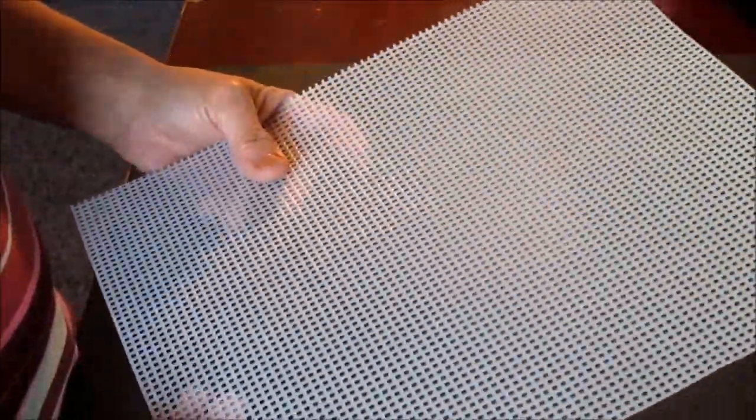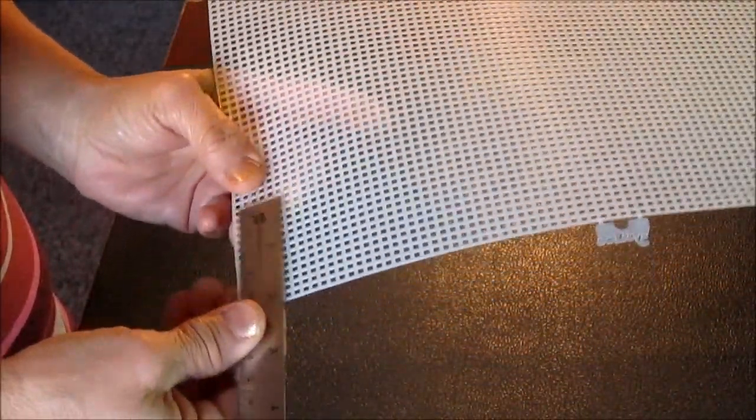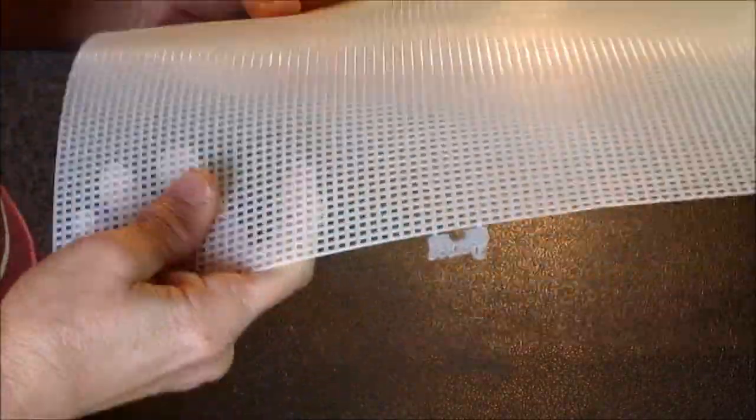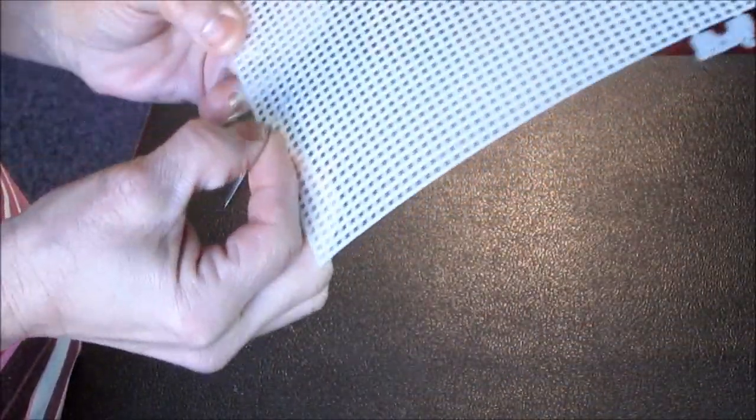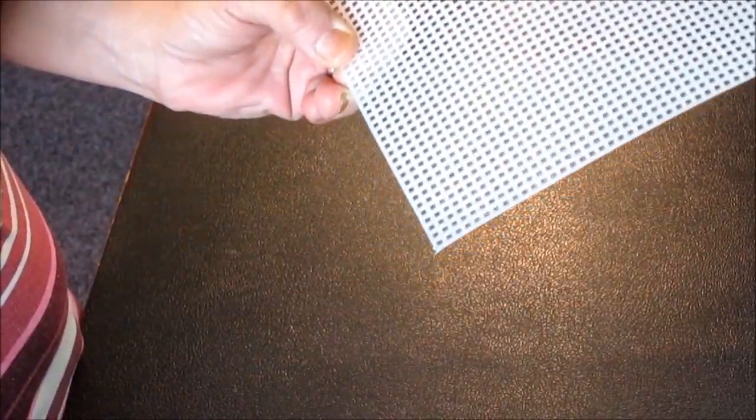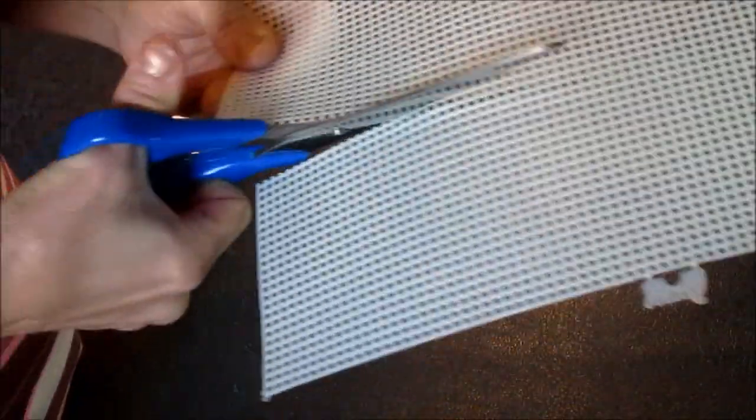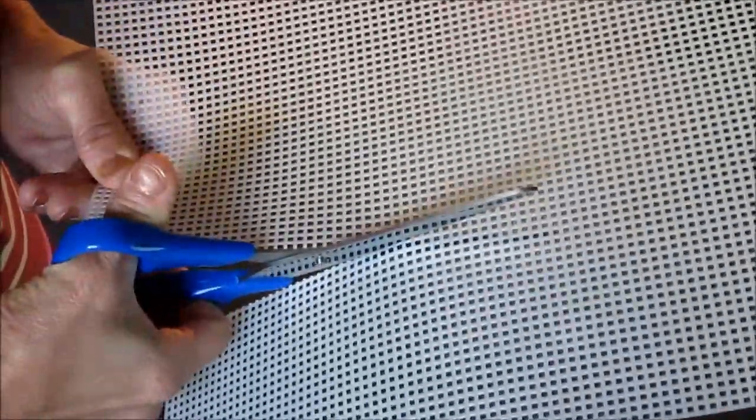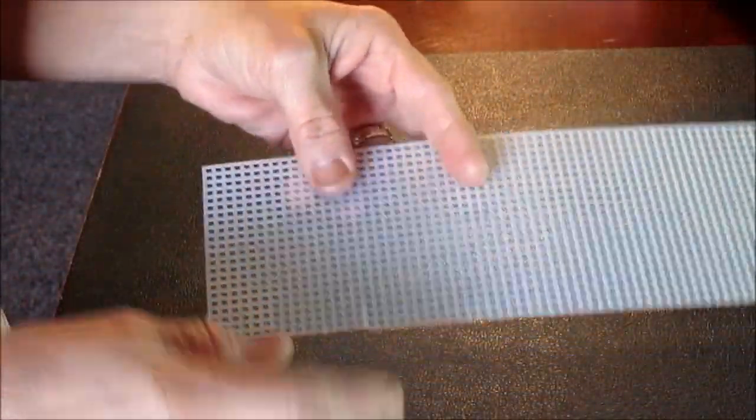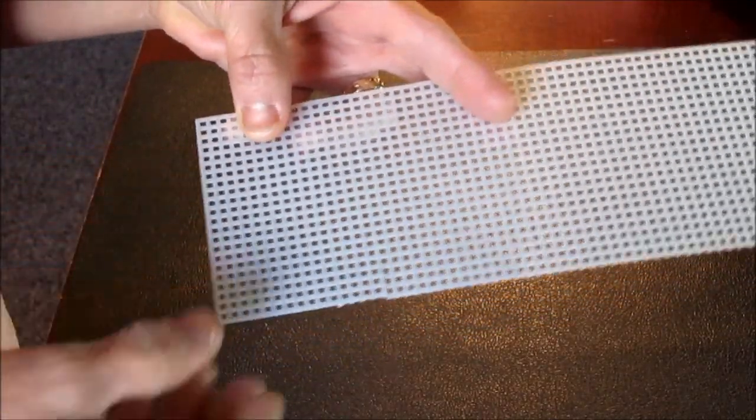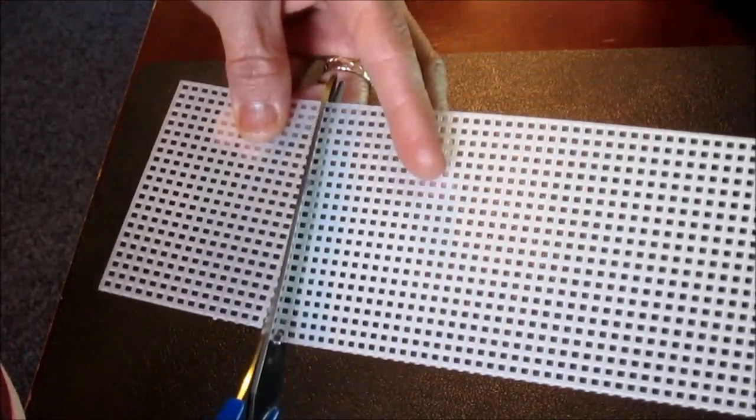For the particular size I am showing you how to make today, I am using a seven count plastic canvas and seven count basically means that there are seven holes per inch. I like to work with the stiff canvas but the only problem with that is it only comes clear. What we want to do is count 21 holes in one direction and we will make sure we don't cut on the 21st hole. We'll cut on the 22nd and go straight across.